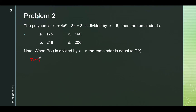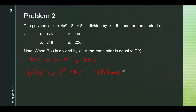If the divisor is x minus 5, and the divisor is in the form x minus r from the remainder theorem, then we take r to be positive 5. We compute the remainder equal to p(5), obtained by replacing x by 5: 5 cubed plus 4 times 5 squared minus 3 times 5 plus 8.